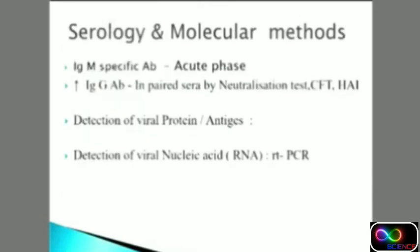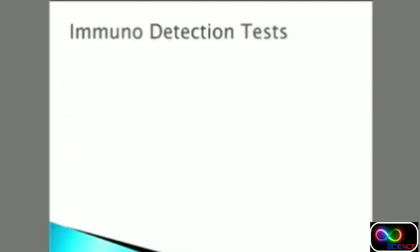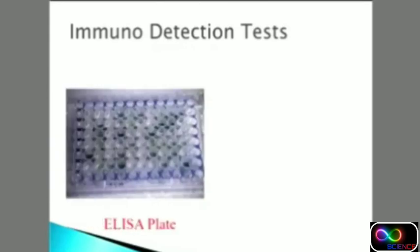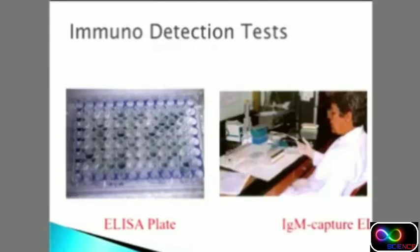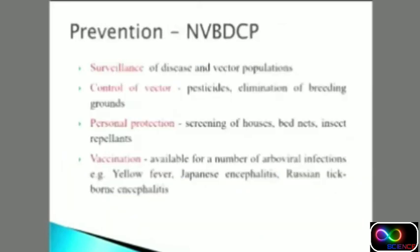Serological testing involves a fourfold rise in paired sera. For recent infection, IgM detection is used; for IgG, fourfold rise in convalescent sera is examined. Antigen or protein detection is done in the early phase of disease. Molecular methods such as PCR or RT-PCR are also used. ELISA is performed using 96-well plates and is IgM-specific or IgG-based.